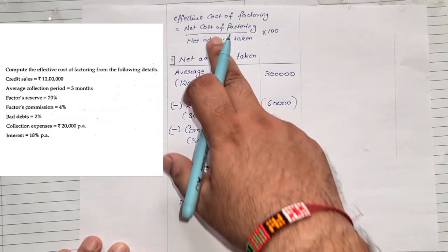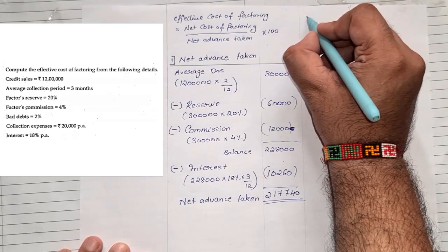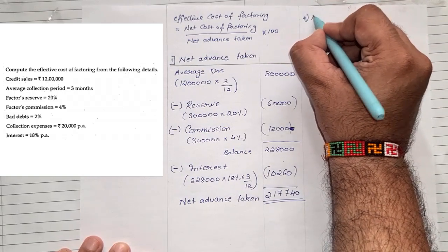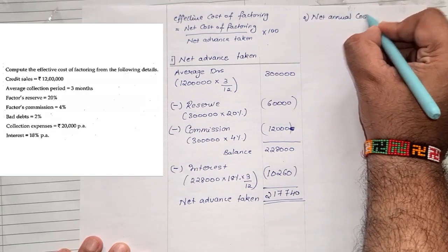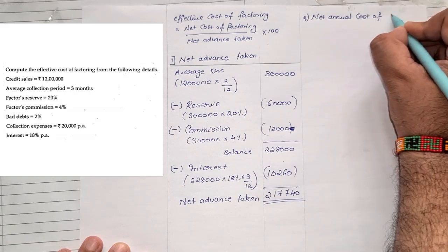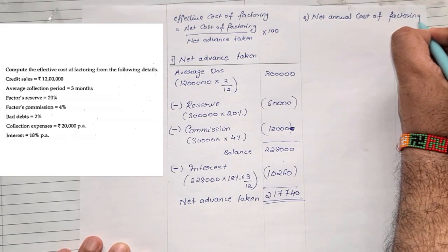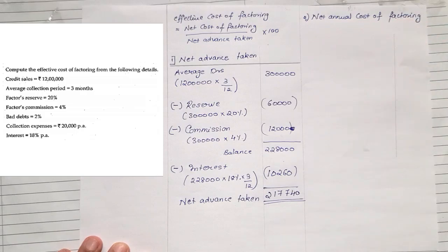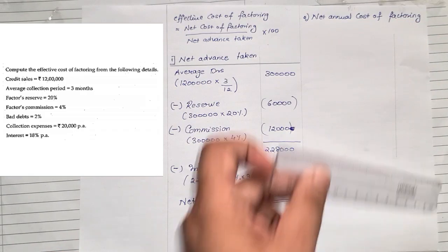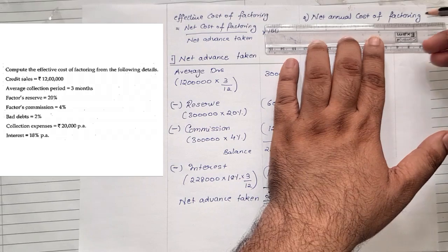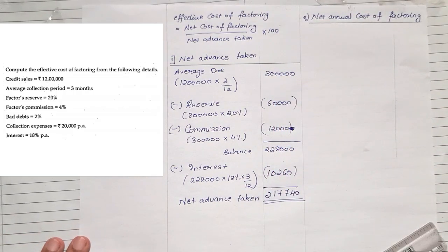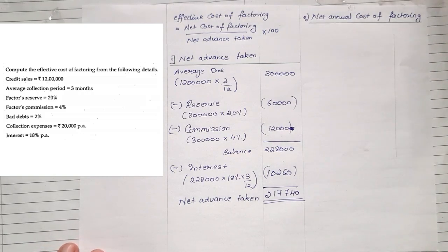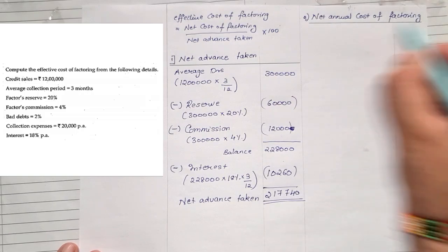We were able to find the first value — that's the denominator. Second, we now have to find the net annual cost of factoring. In order to find the net annual cost of factoring, we will be taking all annual values. Whatever values have been given per month or quarterly, we will be converting them to complete 12 months. The very first thing under net annual cost is commission.